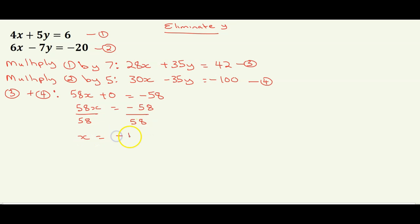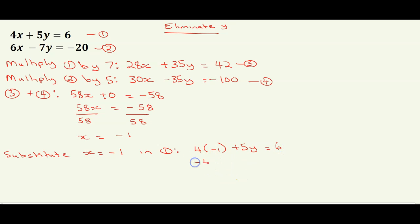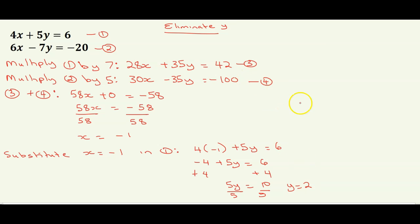Substitute x = −1 into equation 1: 4(−1) + 5y = 6, which gives −4 + 5y = 6. Add 4 to both sides: 5y = 10, so y = 2. Therefore x = −1 and y = 2. In coordinate form, the answer is (−1, 2).